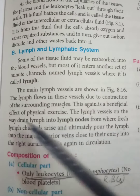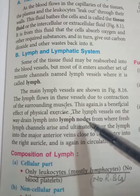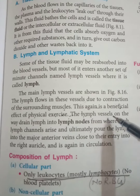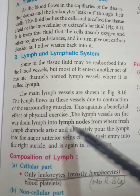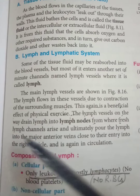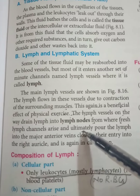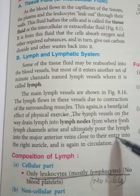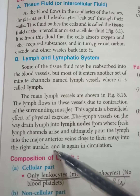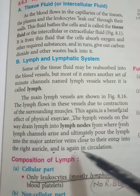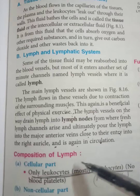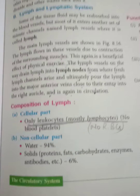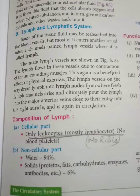This flow is enhanced by physical exercise — this is a beneficial effect of exercise. Lymph vessels drain lymph into lymph nodes along the way, from where fresh lymph channels arise, and ultimately pour the lymph into major anterior veins close to their entry into the right auricle, returning it to circulation.